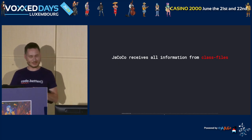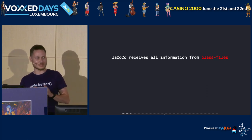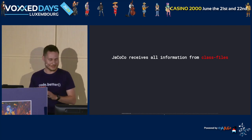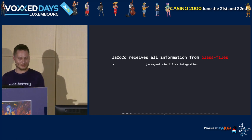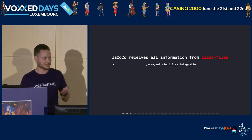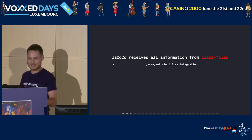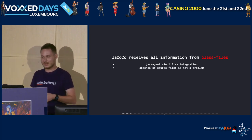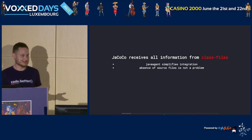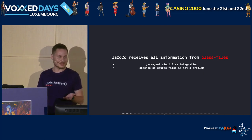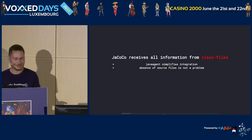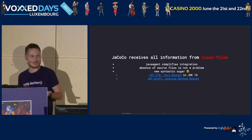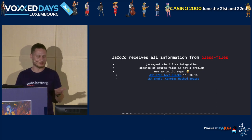It's important to understand that JaCoCo receives all information from the class files, not from your source files. It looks at the result of compilation. This is very important — it's actually a nice thing. It allows simplifying integration into your build tools and projects, because you don't need to interleave with compilation. You can apply JaCoCo on already compiled code.